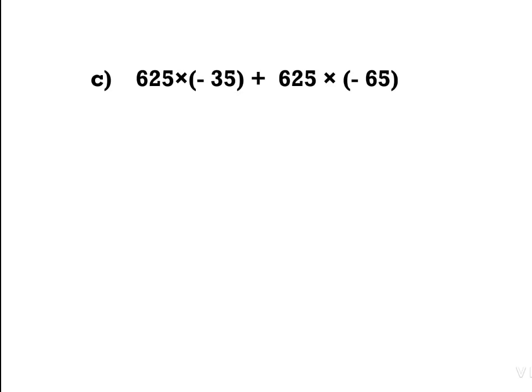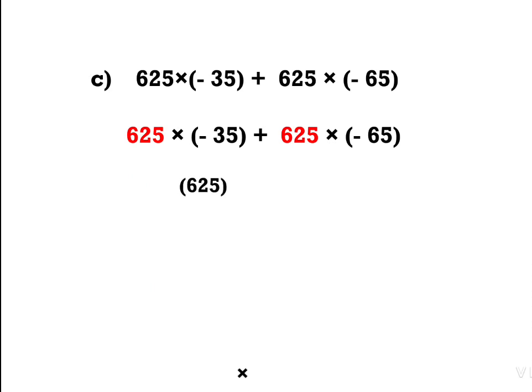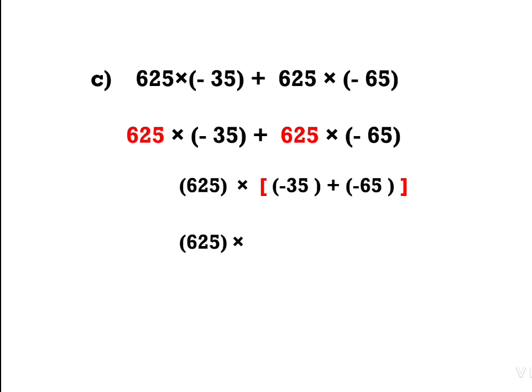Next, C question: 625 × (−35) + 625 × (−65). Here 625 is common, so we write 625 outside the bracket: 625 × (−35 + (−65)). Both are negative numbers and addition is there, so we add them and put the negative sign. 35 + 65 = 100, both are negative, so we get −100. Therefore 625 × (−100) = −62,500.